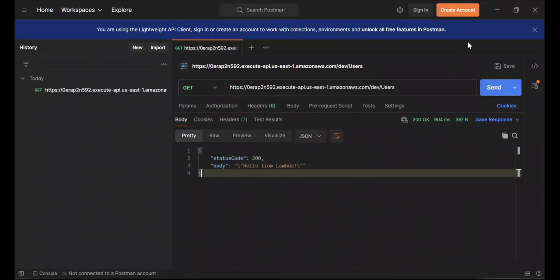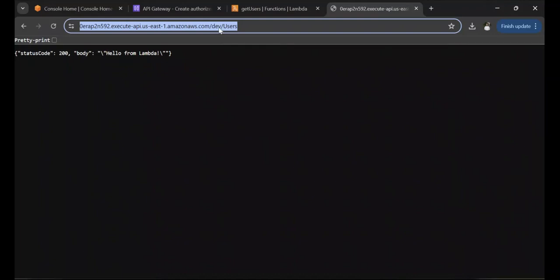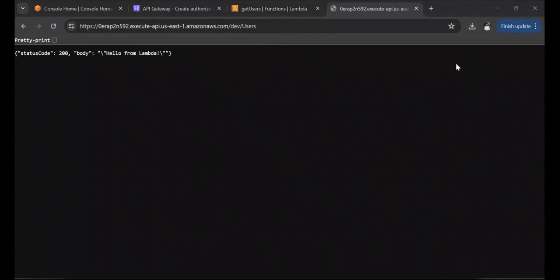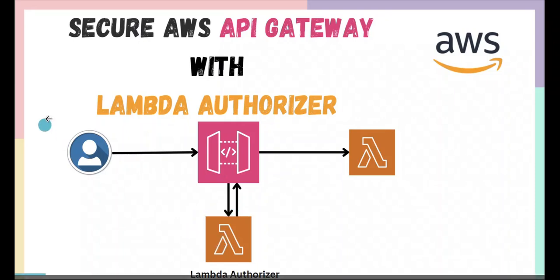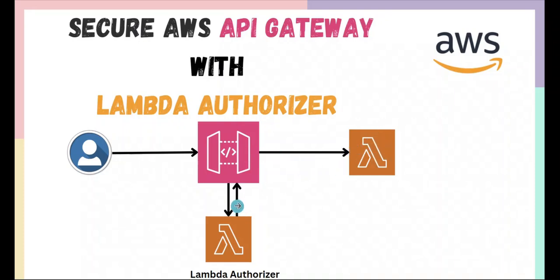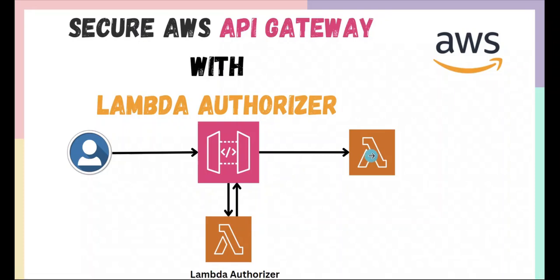There is one problem though — anyone who has access to this URL can access this API. There is no security or authentication implemented. So let's add the authentication part. We've created the API in API Gateway and routed it to Lambda. Now we're going to add a Lambda Authorizer so that whenever API Gateway receives a request, it validates and authenticates it before forwarding to the backend Lambda.